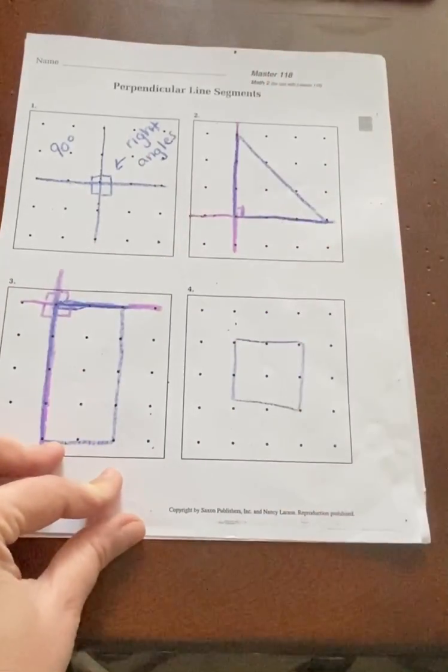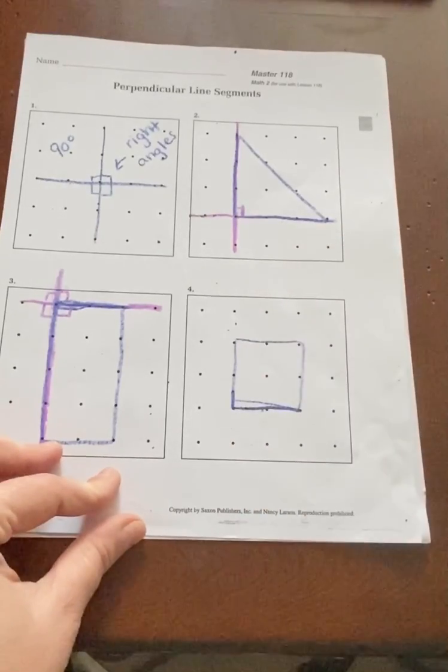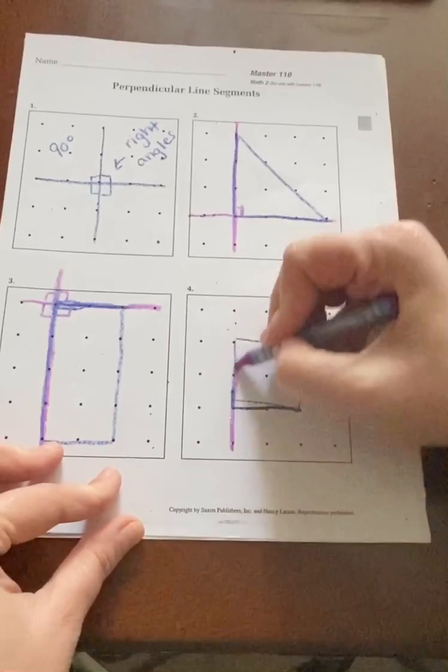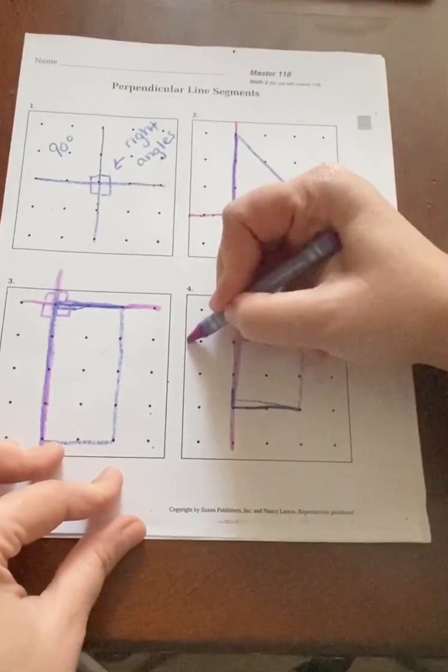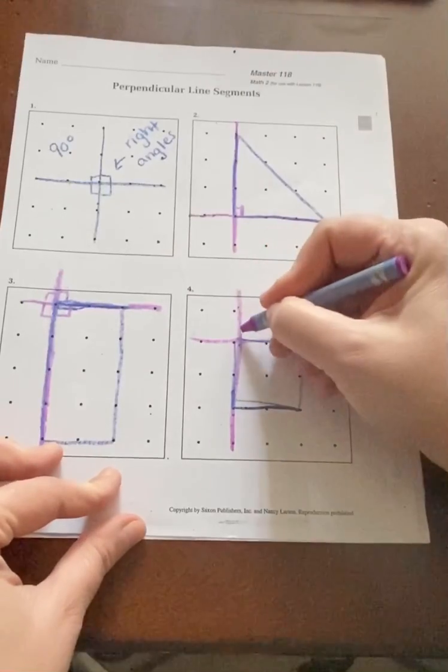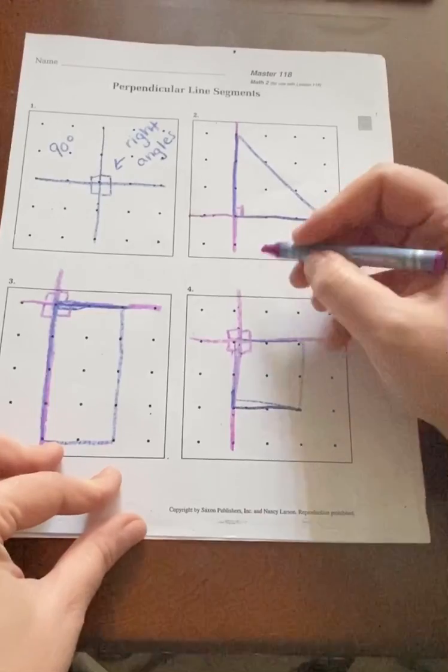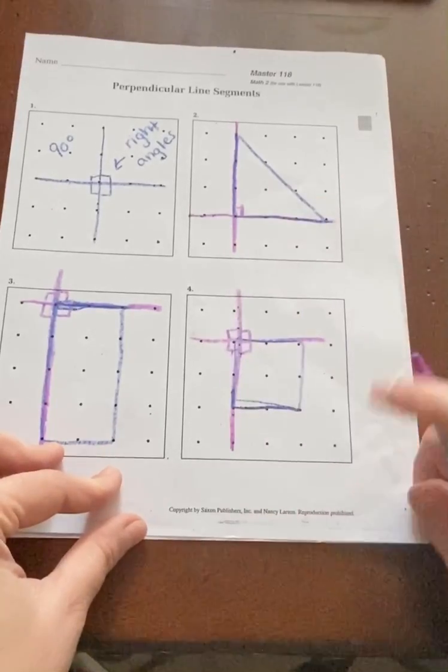Let's go ahead and my square is a little lopsided. Fix that a little bit. Now again, there could be multiple perpendicular line segments on a square. I'm gonna go ahead and show this one. All of where they meet are 90-degree angles. So this is my perpendicular line segment.